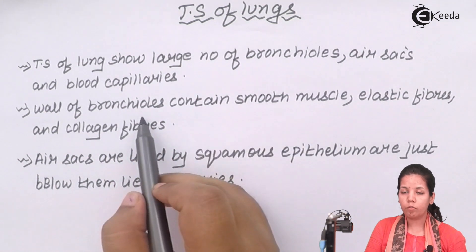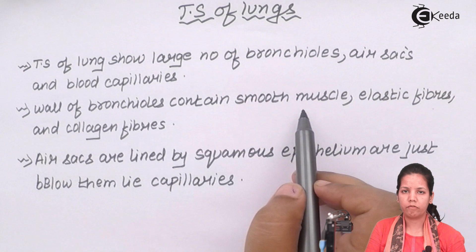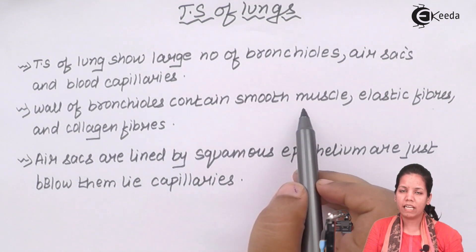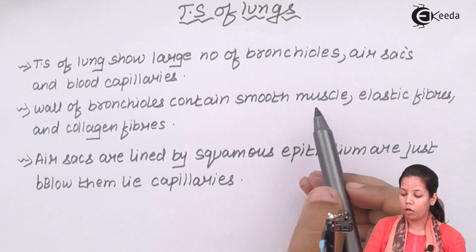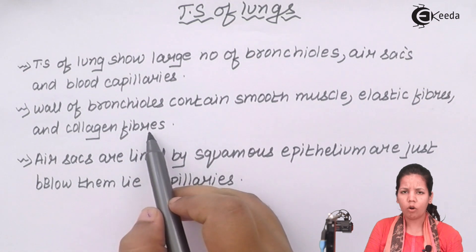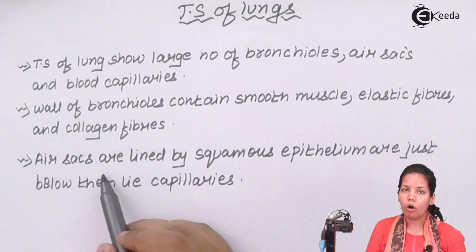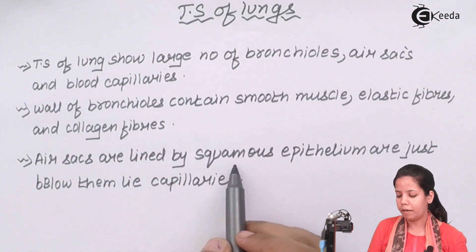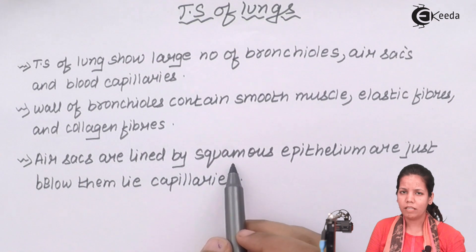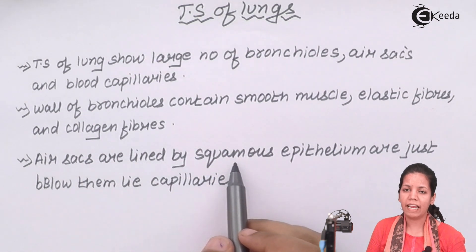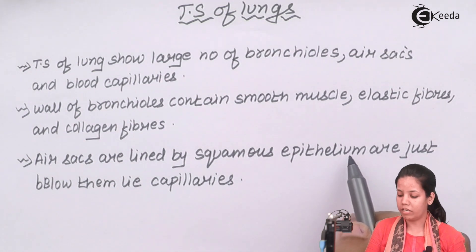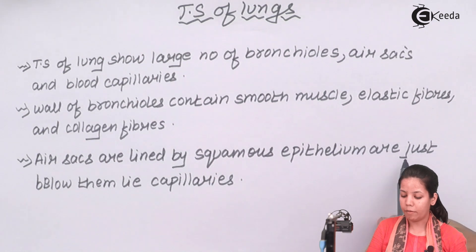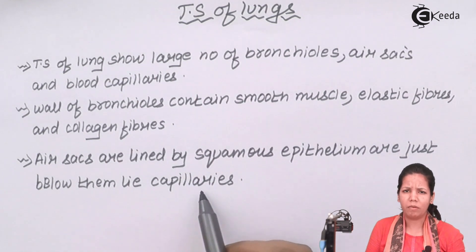Also, the walls of the bronchioles or bronchi contain smooth muscle fibers. These smooth muscle fibers help form striated or non-striated muscular regions. Elastic fibers and collagen fibers are a common sight in the bronchial region. Air sacs or alveoli are lined by squamous epithelium cells, which have intracellular spaces, and just below them lie capillaries or blood vessels.